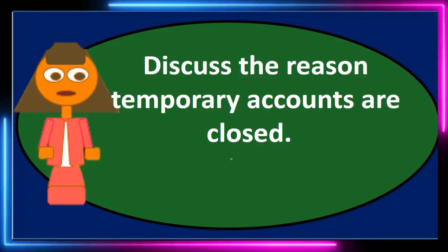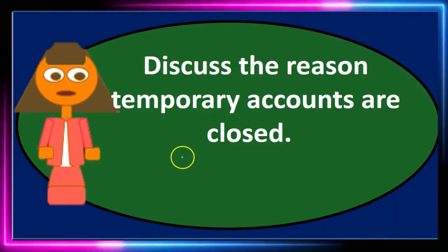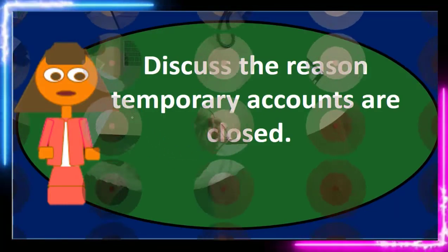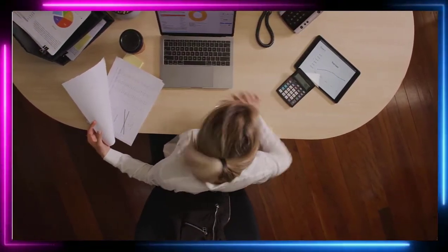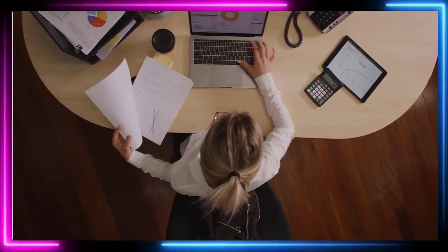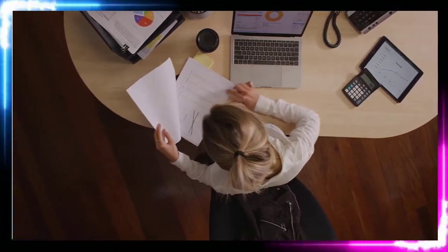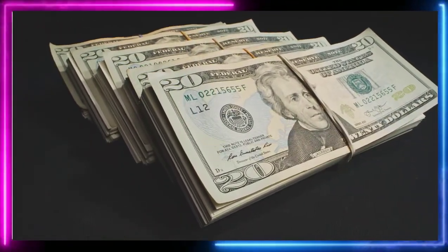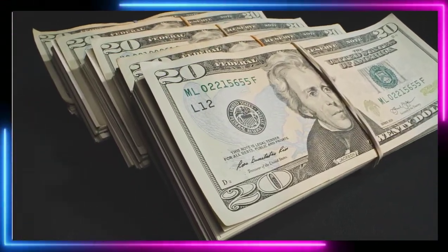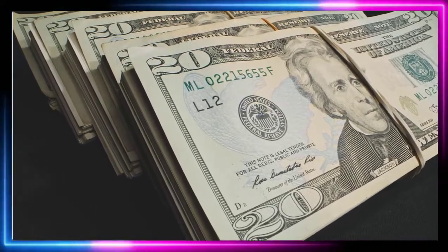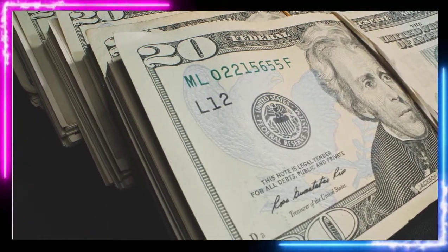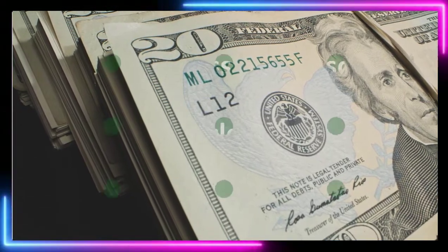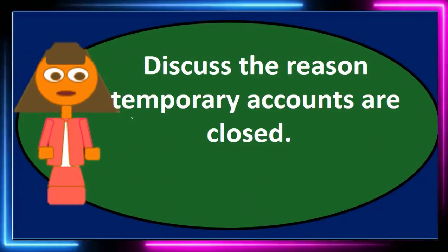Why do we do the closing process and what is it? The closing process is going to close those temporary accounts to the capital account. The temporary accounts include all income statement accounts — revenue and expenses — and the draws account, or dividends if it were a corporation, which need to be reset to zero in order to start the next period.